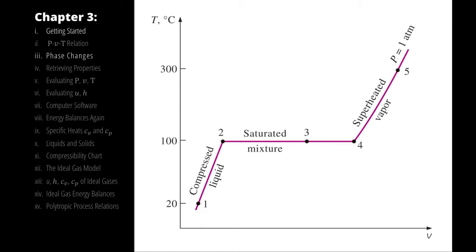So for a line of constant pressure: temperature increases along with specific volume in the liquid phase; temperature remains constant as the specific volume increases for the phase transition; and then, once we have changed phase, temperature increases with specific volume again. On this plot, point one represents a compressed liquid, two represents a saturated liquid, three represents an arbitrary saturated liquid-vapor mixture, four represents a saturated vapor, and five represents a superheated vapor. That horizontal line is the saturation condition corresponding to the phase change between liquid and vapor.